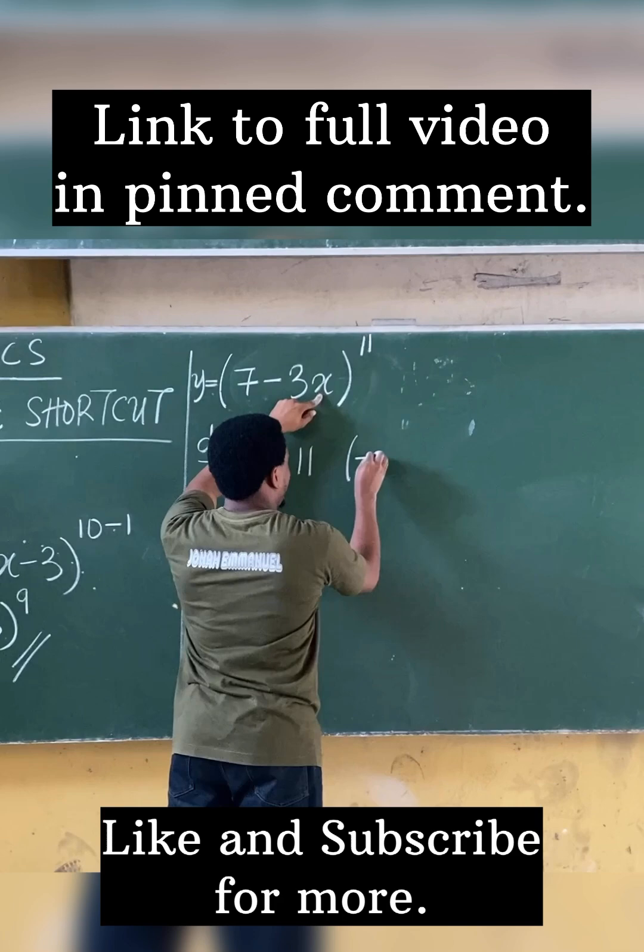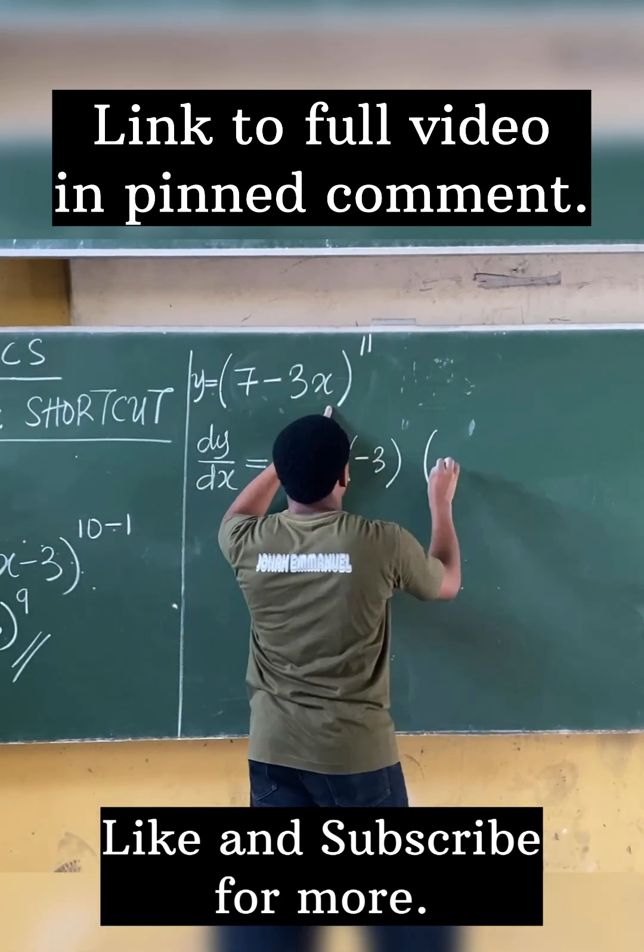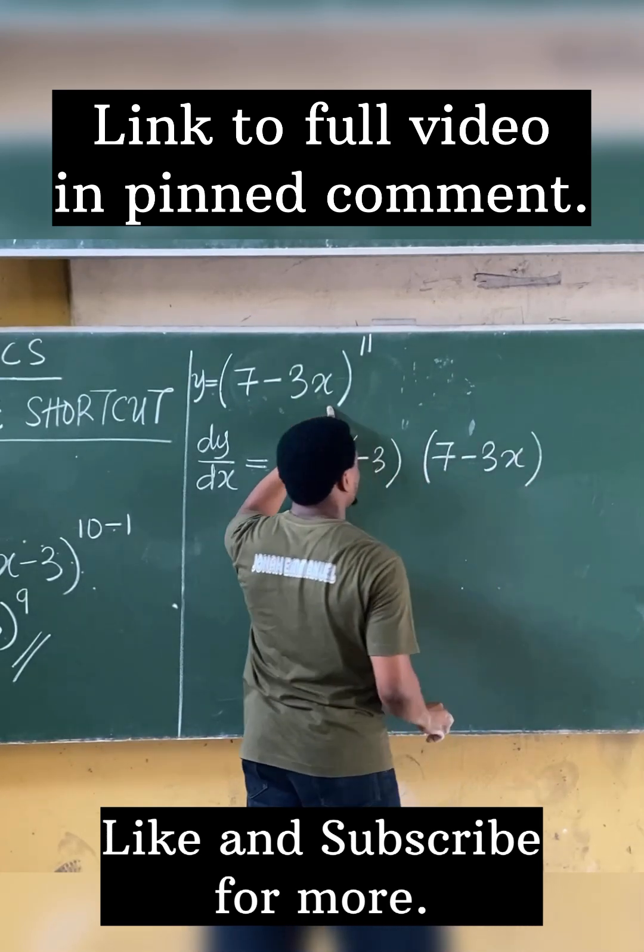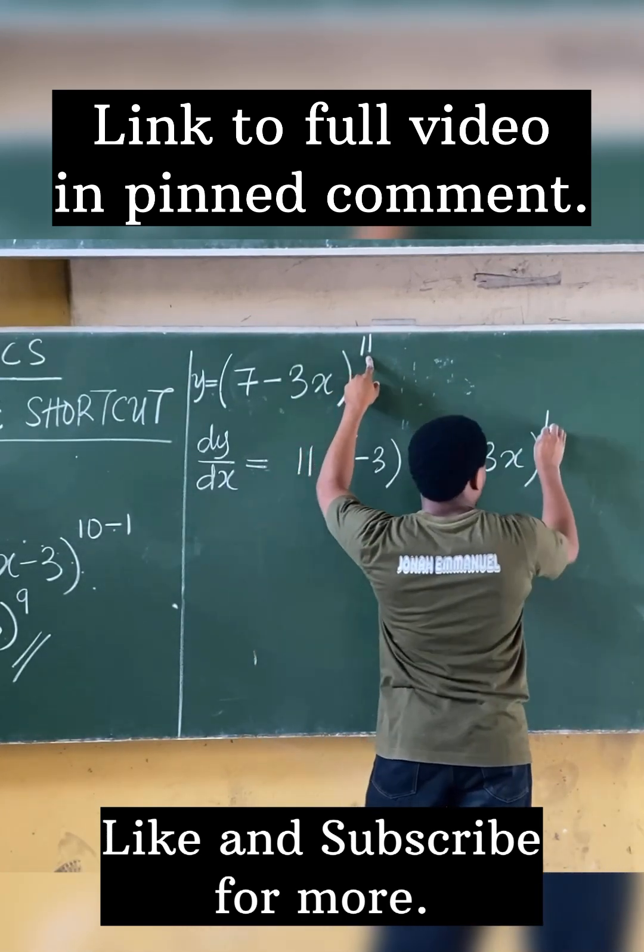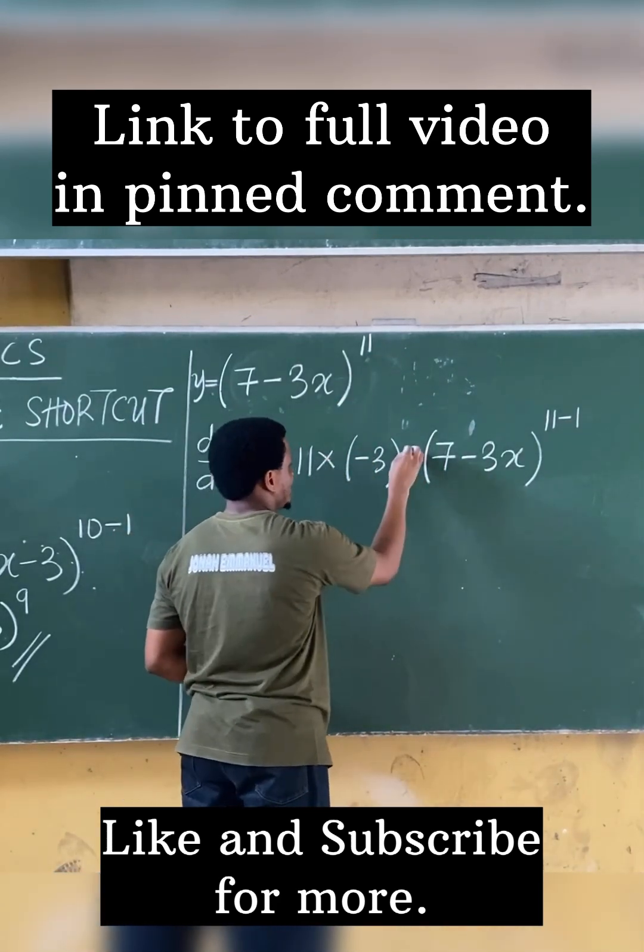have that as -3. Step three: repeat the term in the bracket. If I repeat this, I'll have 7 - 3x. Finally, step four: subtract 1 from the power. 11 - 1. Of course, last step: multiply everything together.